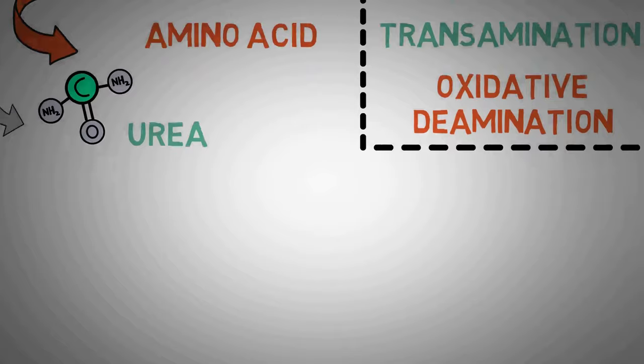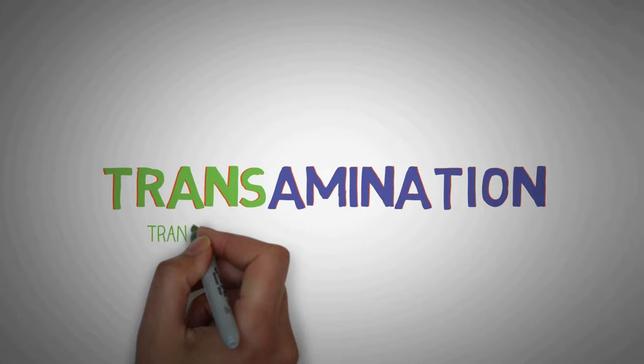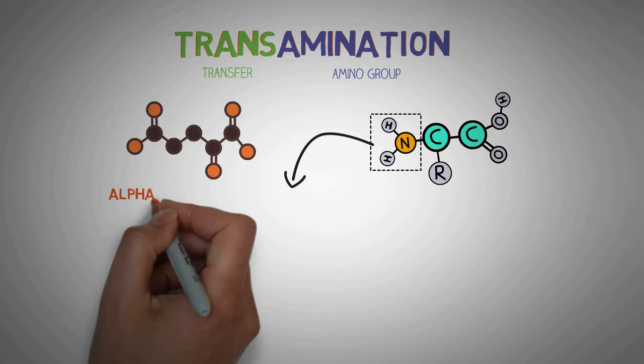The first step is known as Transamination. The second step is Oxidative Deamination. If you look at the word Transamination, it is made up of two words Trans and Amination which basically mean transfer of an amino group. Now what essentially happens is that the amino group in an amino acid which contains a nitrogen is taken from the amino acid and is transferred to some other molecule.